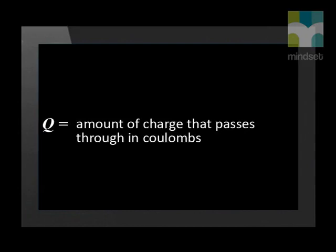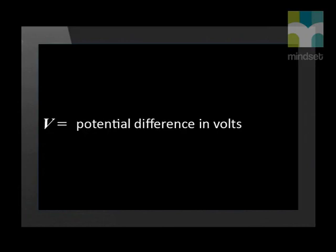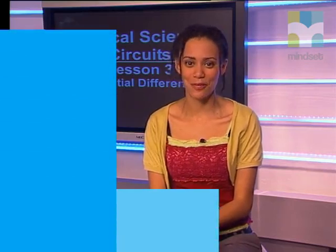In this equation, Q equals the amount of charge that passes through in coulombs, and V equals potential difference in volts. Now let's rejoin Bruce to learn more about potential difference.